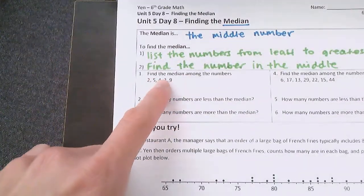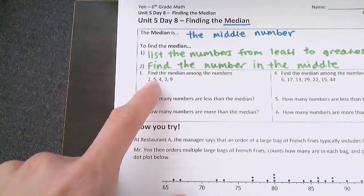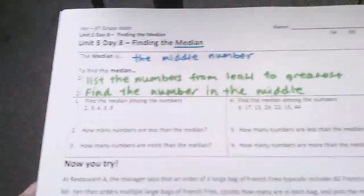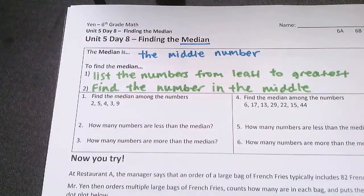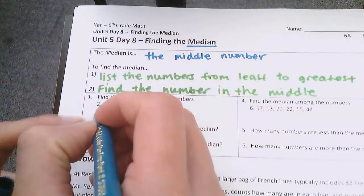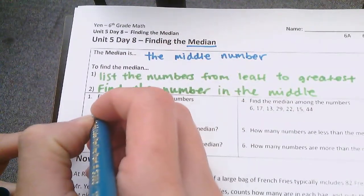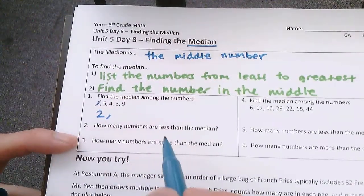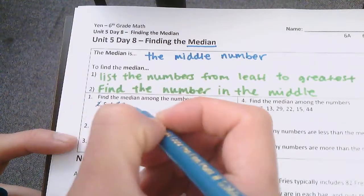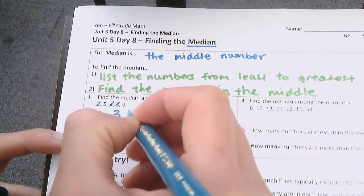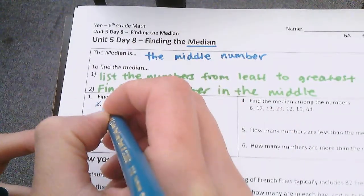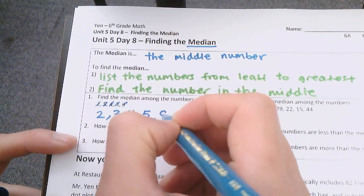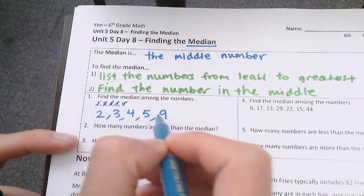In number one it says to find the median among the numbers 2, 5, 4, 3, and 9. So step number one is to list the numbers from least to greatest. Let's do that now. The lowest number is 2, then 3, then 4, then 5, and then 9 is the largest. So I've taken these numbers and now they're in least to greatest.